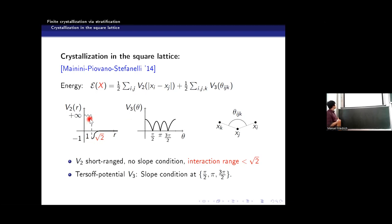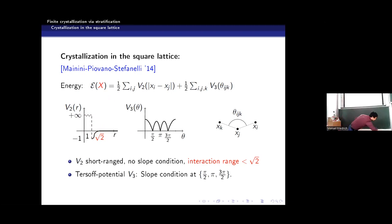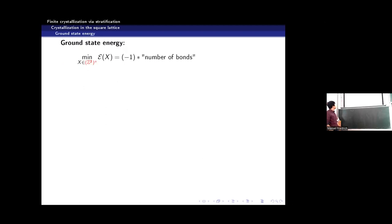I take a potential which is already zero at √2. This ensures that in my square lattice, I only have interactions along the vertical and horizontal lines, never along the diagonal. So whenever I have bonds, they will be vertical or horizontal in the square lattice.